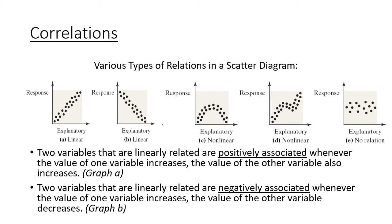The two that we're going to focus on are if they show up as lines. Those are the two we're going to focus on here in Stats 1. If it is going up like Graph A, we say that's a positive association. If it's going down and in a line, we say that's a negative association.